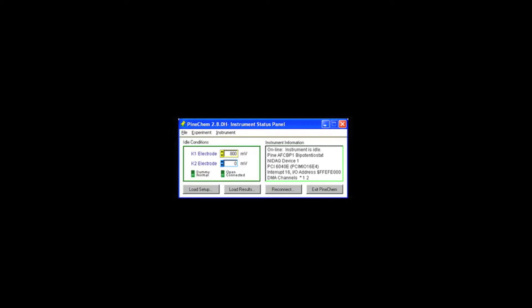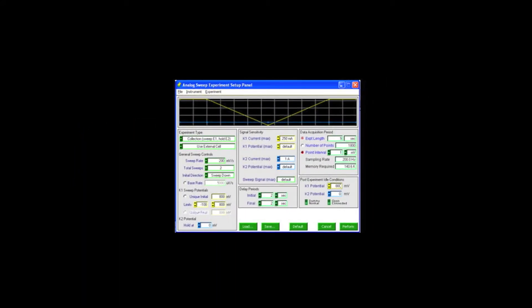Choose the experiment menu option and select analog sweep voltammetry. Adjust the settings to match those shown. Click on perform to start the measurement. The cyclic voltammogram should be relatively flat with no significant peaks. If the plot is not fairly straight, the electrode should be polished again and the background scan should be repeated. If the problem is not solved, the cell or electrolyte solution may be the problem and should be cleaned or replaced.